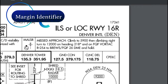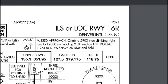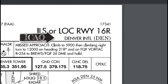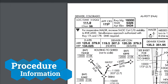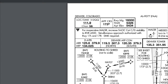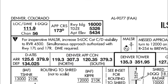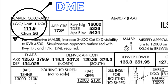Let's start off by taking a look at the top right of the approach plate. This is called the margin identifier and it lists the procedure — in this case we're looking at the ILS or localizer to runway 16 right — as well as the ICAO right underneath. Sliding over to the left, we have procedure information starting with the localizer/DME frequency and a channel number underneath. That's really important because it tells us that the localizer also gives us the DME.